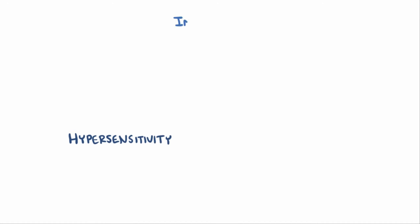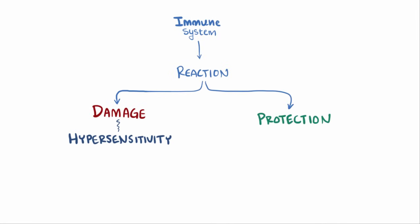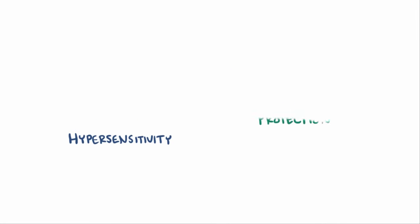Having a hypersensitivity means that someone's immune system has reacted to something in such a way that it ends up damaging them as opposed to protecting them. There are four different types of hypersensitivities, and in the first type, or type 1,